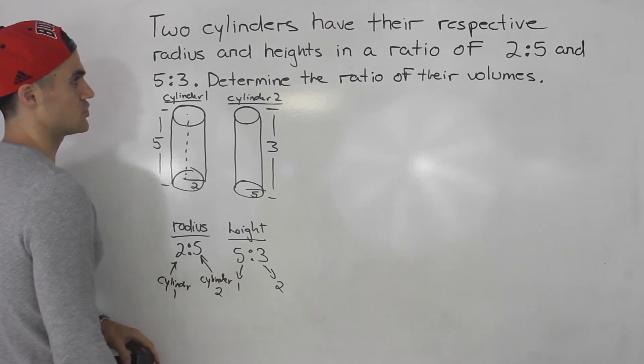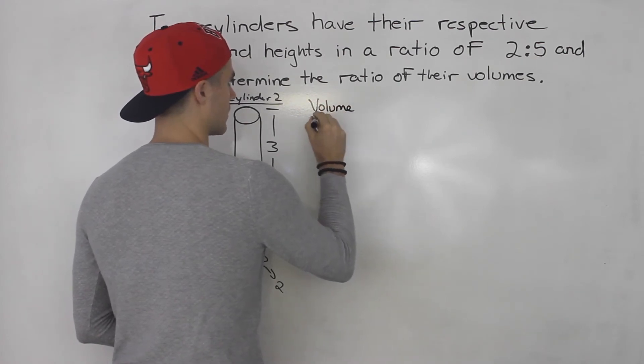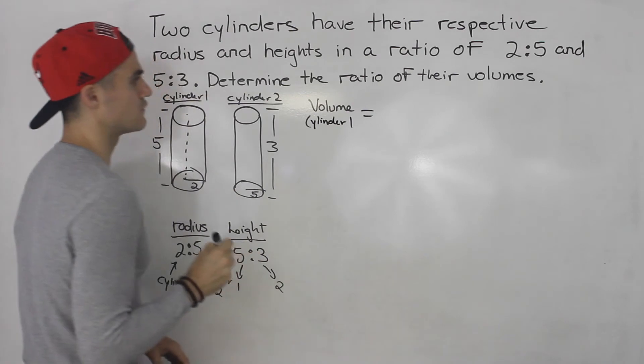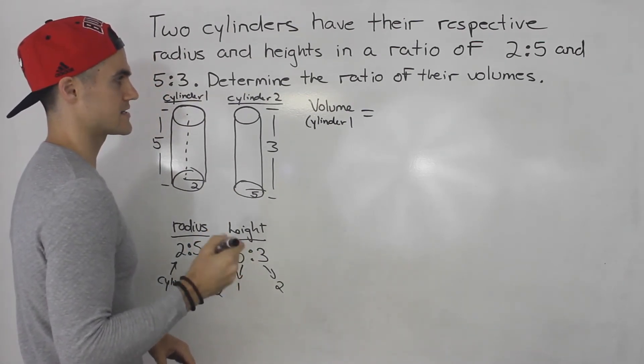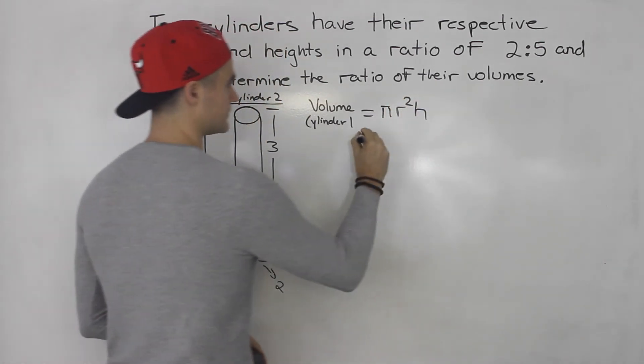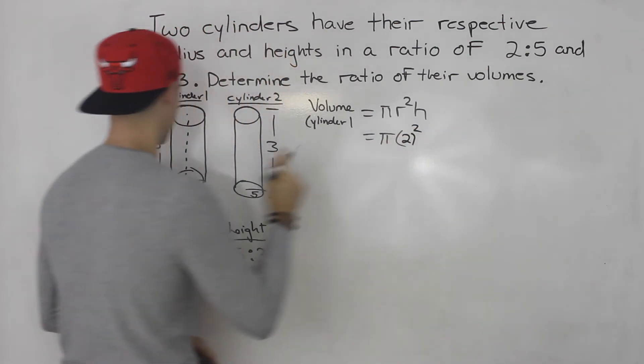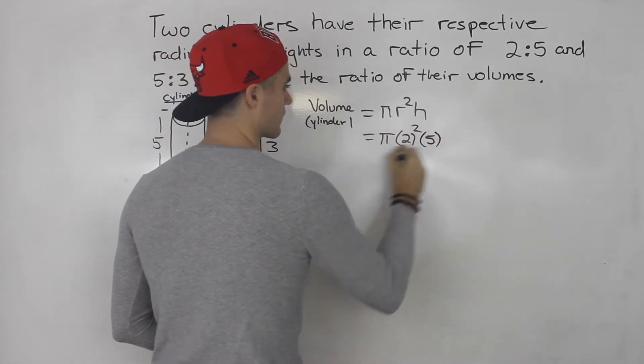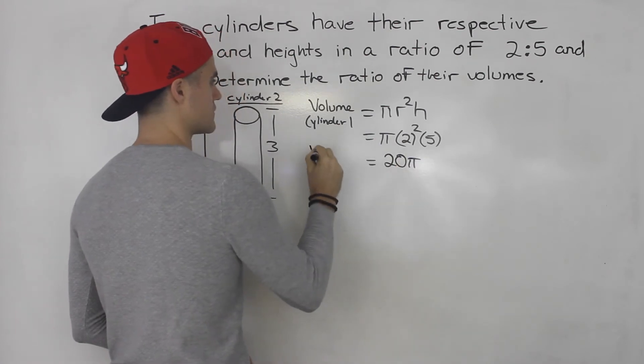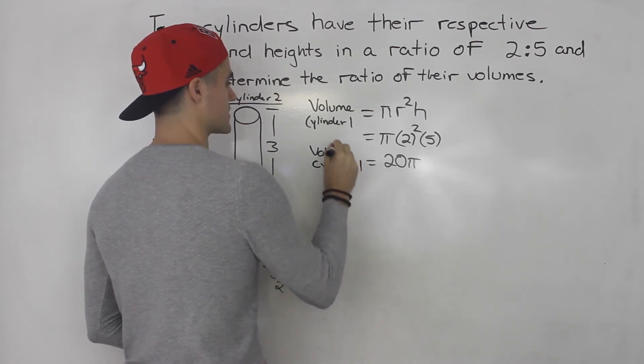Okay so we have to determine the ratio of their volume. So let's start off by finding what's the volume of cylinder 1. Well we know that the volume of a cylinder is pi r squared h. So what's the radius of cylinder 1? It's 2 and then the height is 5. So 2 squared is 4 times 5 is 20. So 20 pi. That is the volume of cylinder 1.